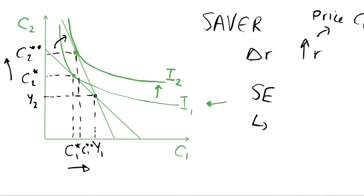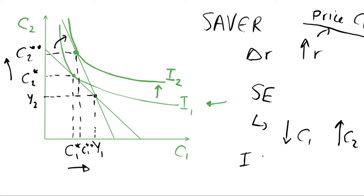So there is a substitution effect which is effectively increasing the price of consumption in period one. This will have a negative effect on consumption in period one and a positive effect on consumption in period two. So we have our income effect, which is increasing consumption in both periods, and our substitution effect, which is decreasing consumption in period one and increasing consumption in period two.